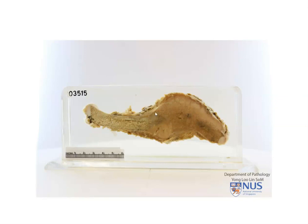In summary, this is a tumor arising in the clavicle of a child. There is a fleshy tumor arising in the diaphysis that is expanding the bone, invading into the cortex, as well as through the periosteum into the surrounding soft tissue. This is an Ewing sarcoma — a high-grade, aggressive sarcoma of the bone.